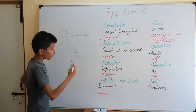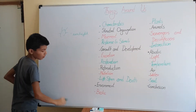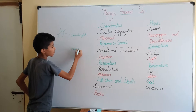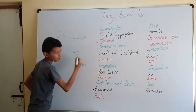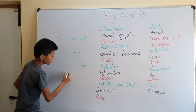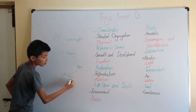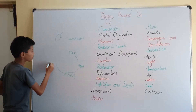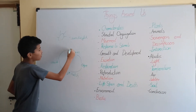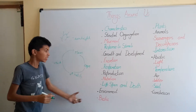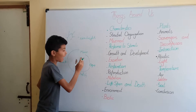For example, a hen lays an egg, the egg hatches, a chick comes out, and then that chick grows and becomes a hen. This process repeats again and again — that is a life cycle.